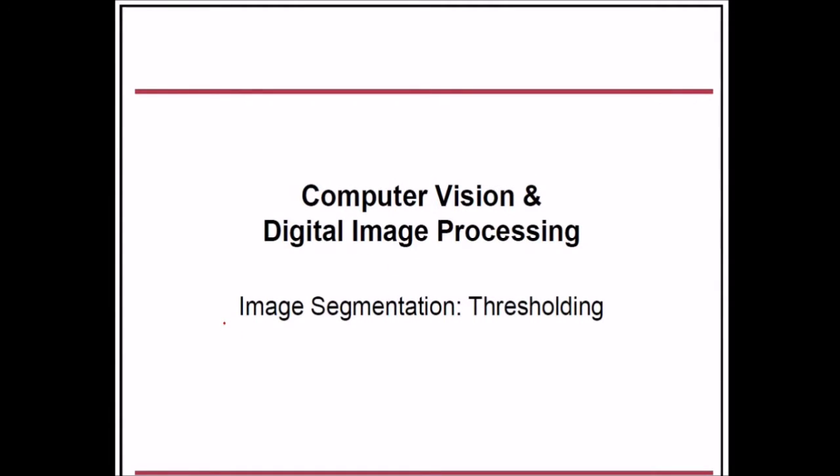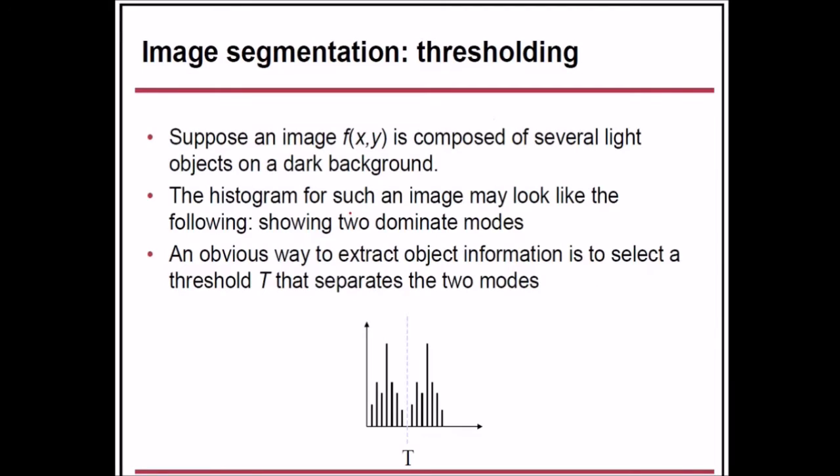Continuing with our previous image segmentation discussion, let's see thresholding in image segmentation. Suppose we have an image f(x,y) which is composed of several light objects on a dark background. The histogram of such an image may look like the following, showing two dominant modes. An obvious way to extract object information is to select a threshold T that separates the two modes.